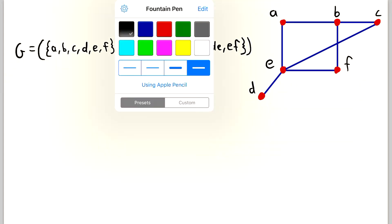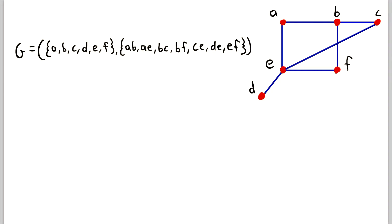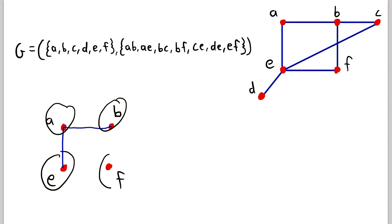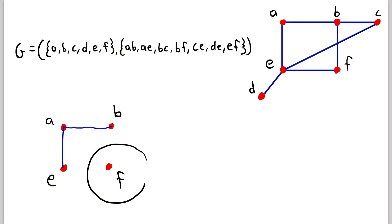We're going to start off by looking at a subgraph of G that is not an edge-induced subgraph. Let's draw some vertices — A, B, E, and F — and then we'll draw the edges. In this subgraph we'll include the edge from A to E and the edge from A to B. This is very clearly a subgraph of G because all of its vertices and edges are in G. However, it's not an edge-induced subgraph because it has an isolated vertex — F is an isolated vertex in this subgraph.